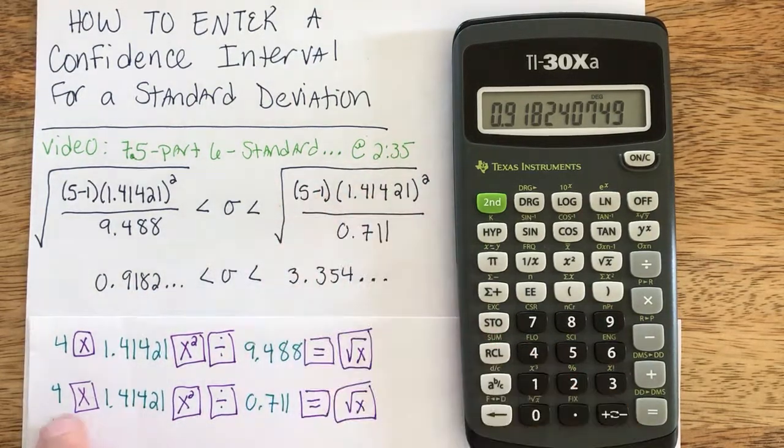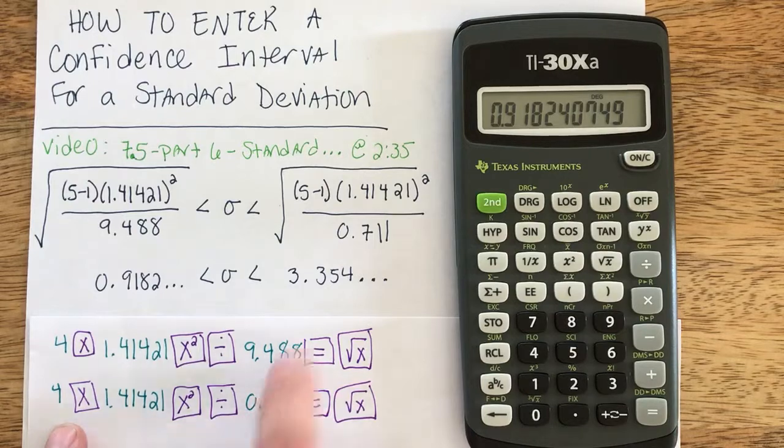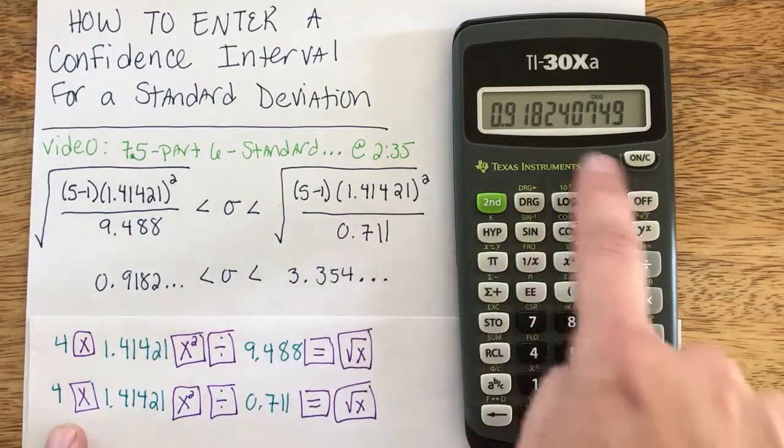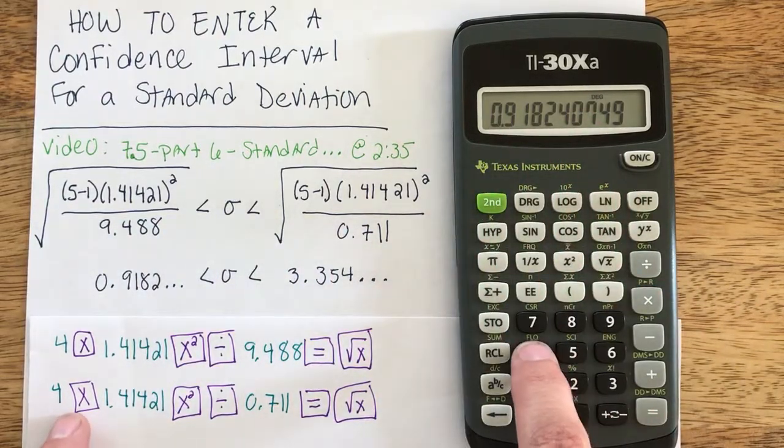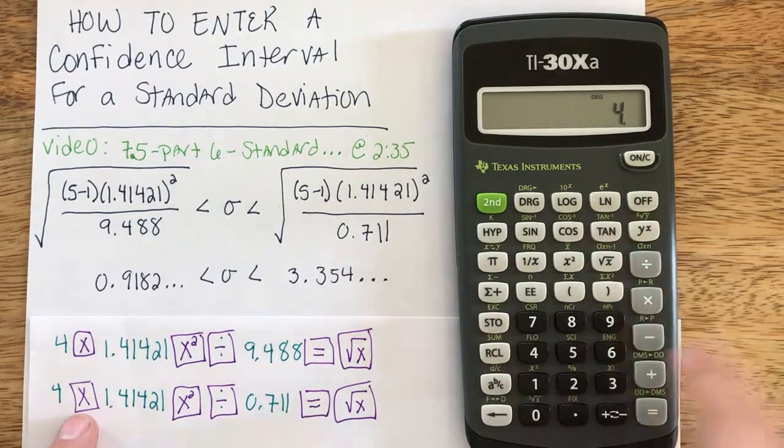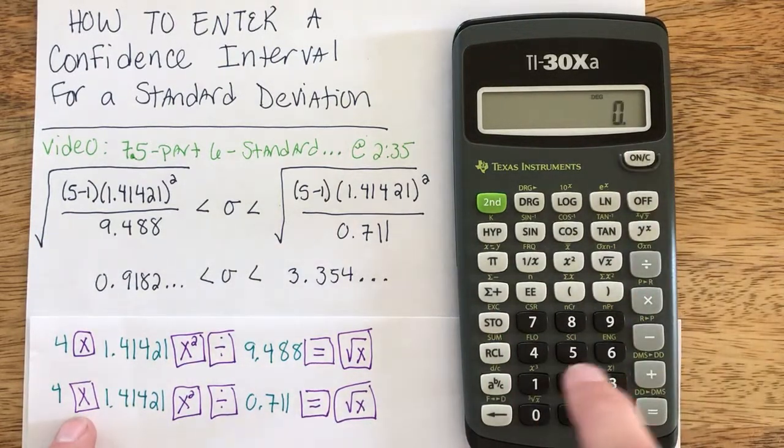Now we're going to basically repeat this process, except the only thing that's going to change is the table value. So I would write that answer down, and you could just launch into the next problem saying 4 times, etc., or you could clear your calculator.